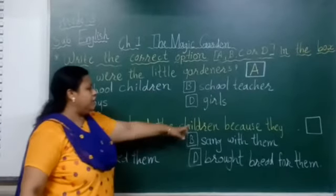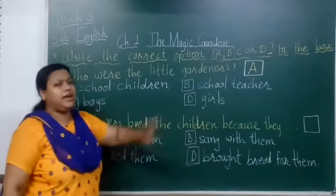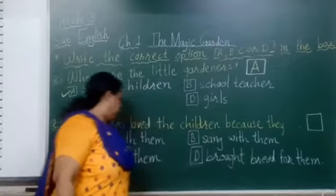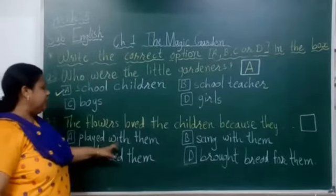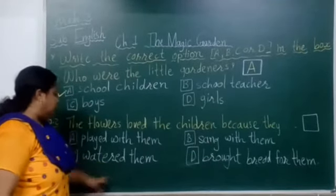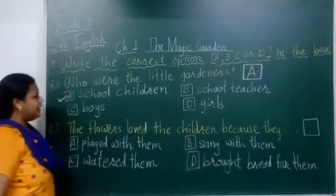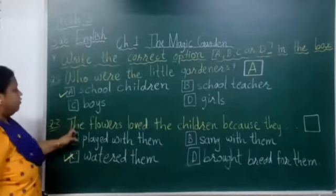Second question: The flowers love the children because they — Option A: played with them. Option B: sang with them. Option C: watered them. Option D: brought bread for them. The correct answer is Option C — watered them. Wo unhe paani dete thay. So write Option C in the box.